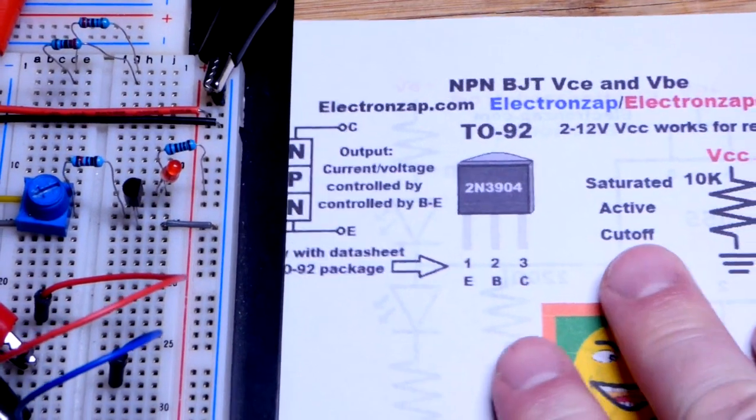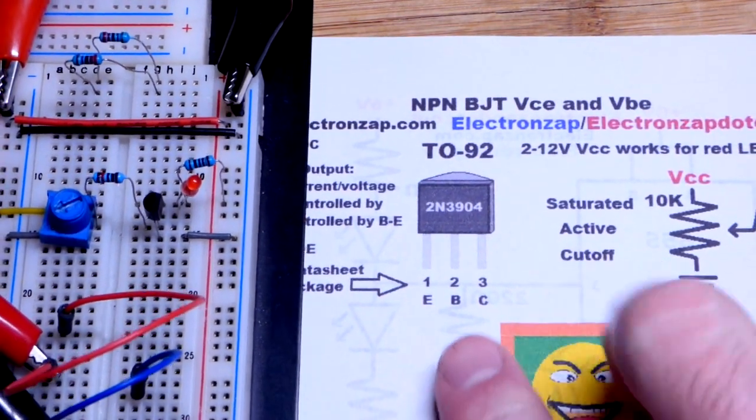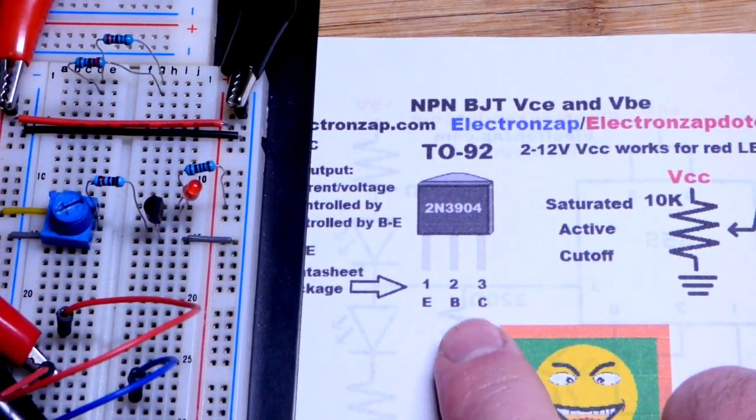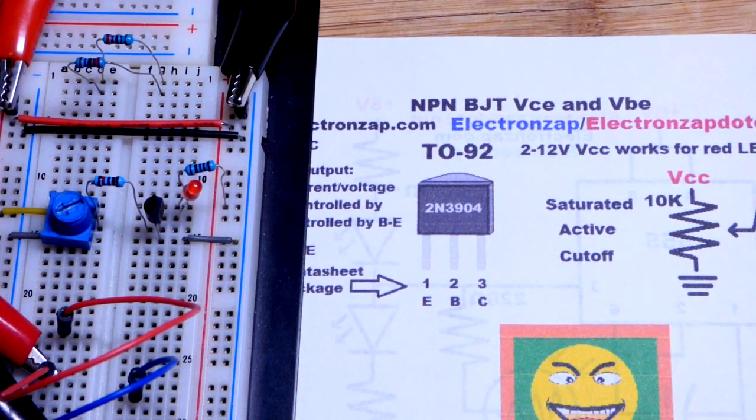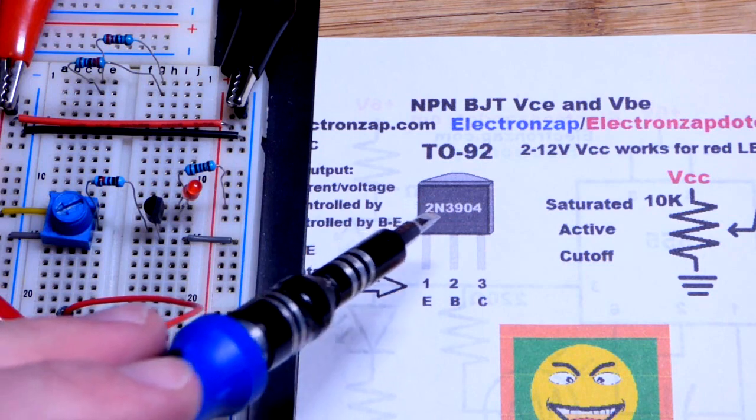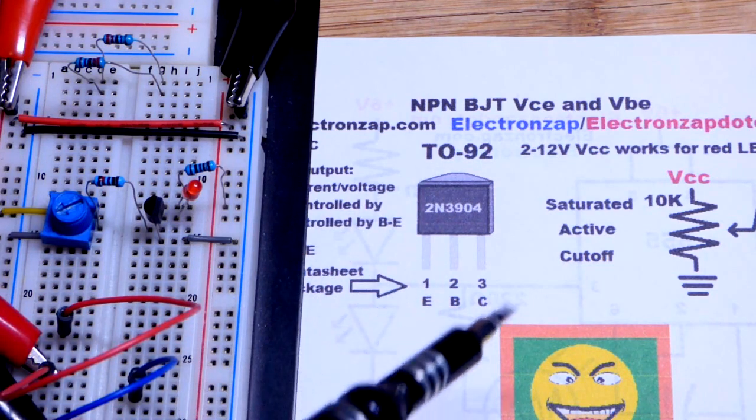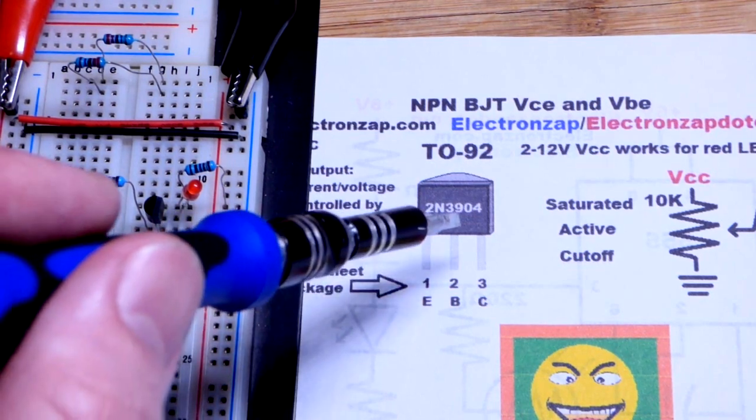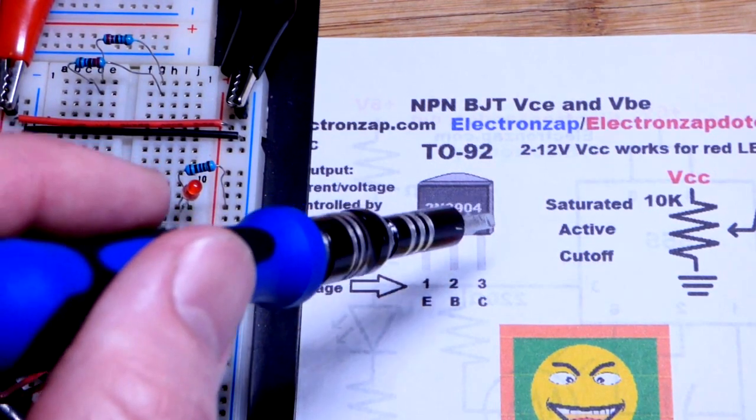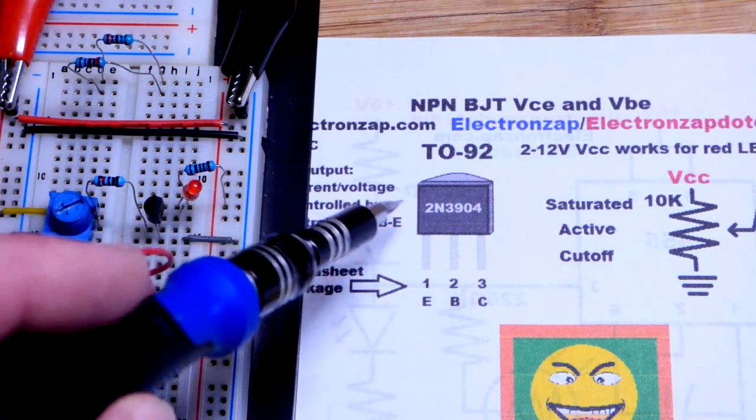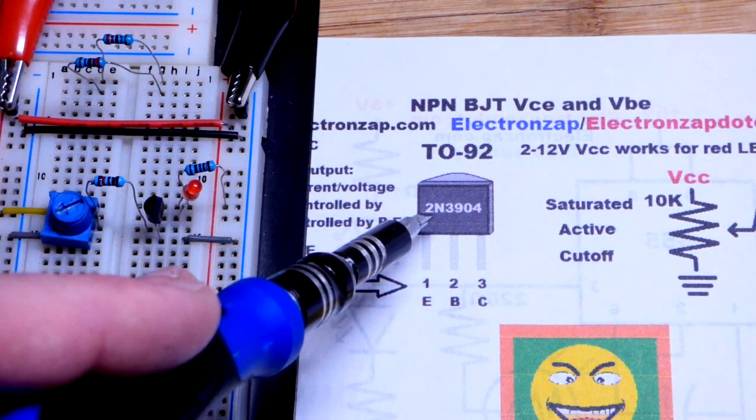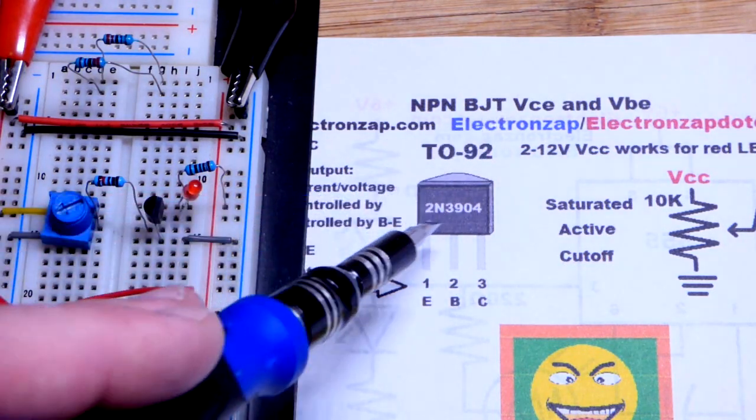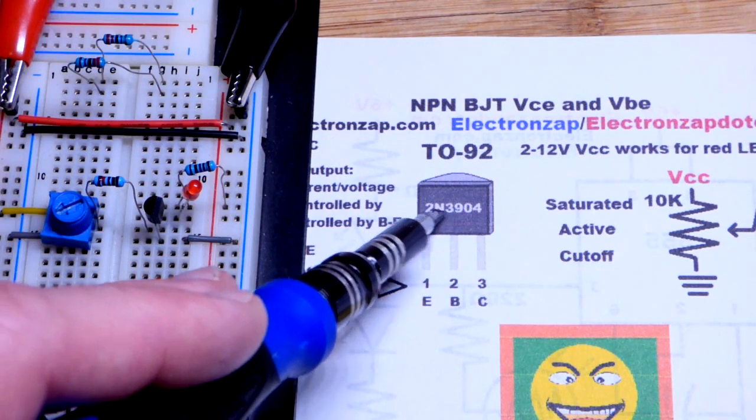Here is the pin layout for the 2N3904, which is the NPN bipolar junction transistor I'm going to use in this video. Any NPN bipolar junction transistor should work just fine, but it may have a different pin layout. So you can see looking at the flat side, the left pin is the emitter, middle pin is the base, and right pin is the collector. I find that to be the case if it's a bipolar junction transistor and it starts with 2N.